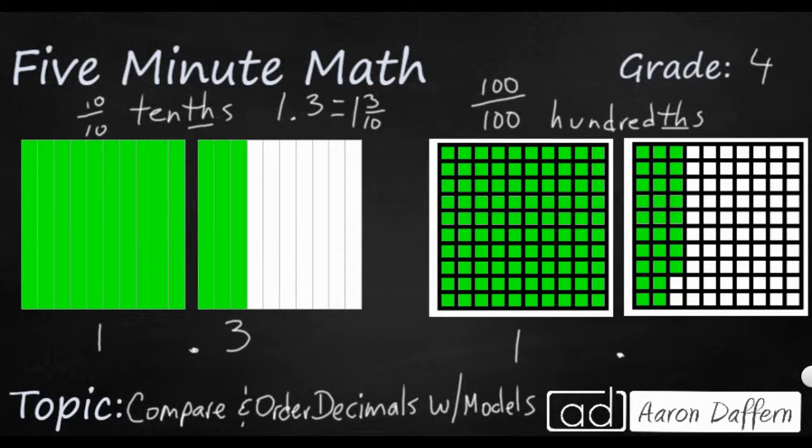Put the decimal here, and let's say I've got two full rows, and then I've got 8. So I've got 2 tenths and 8 hundredths, or 1 and 28 hundredths. So I can either write it like that, or I can write it as a mixed number, 1 and 28 hundredths.